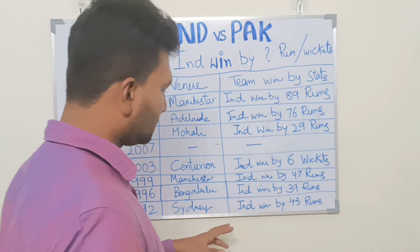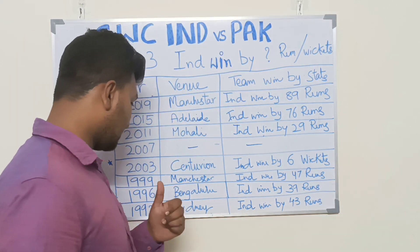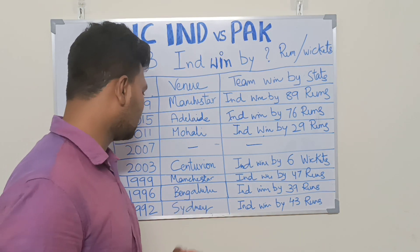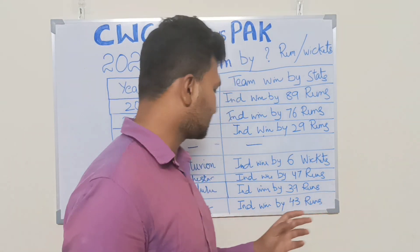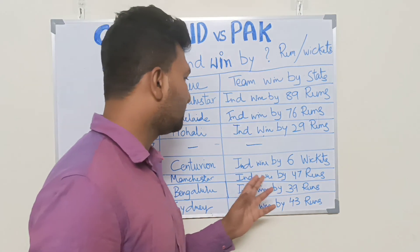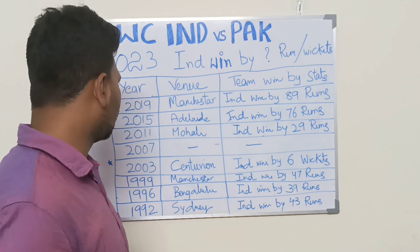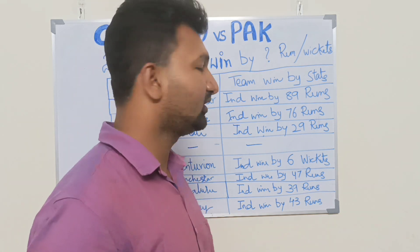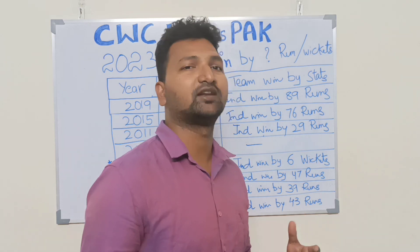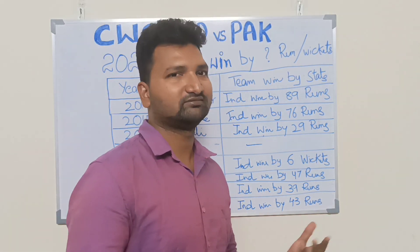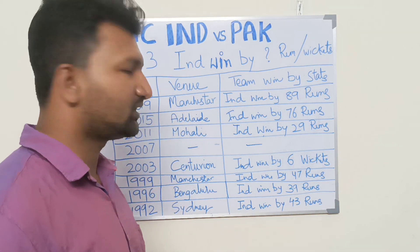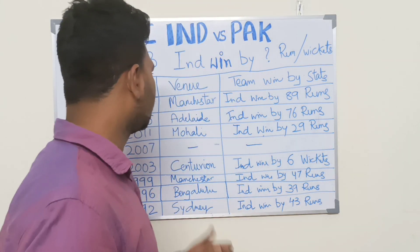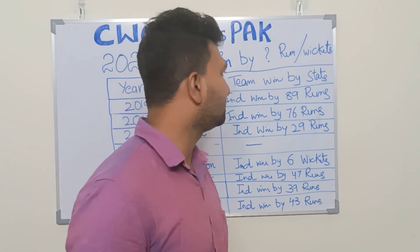In 1992, India won by 43 runs. In 1996 Bangalore, India won by 39 runs. In 1999 Manchester, India won by 47 runs. In 2003 Centurion, India won by 6 wickets. In 2011 Mohali, India won by 29 runs — that was the most beautiful World Cup, with Dhoni as captain. In 2015 Adelaide, India won by 76 runs.